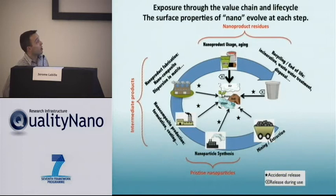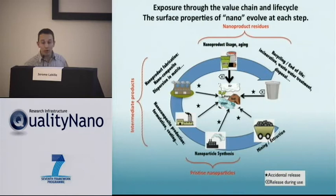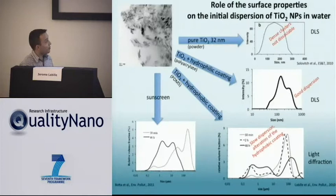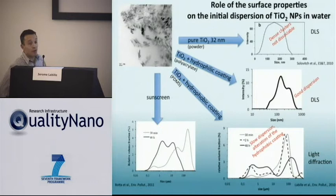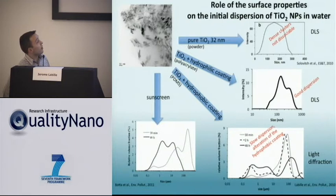Nanoparticles will be coated and embedded in a matrix, and finally it will be more some residues of alteration of nanoproducts that will be released. To illustrate this, I put the example of titanium dioxide nanoparticles used in sunscreens. There are four different formulations of titanium dioxide. The first example is pure TiO2 nanoparticles that disperse pretty well in water, despite the fact that the size measured by DLS is often larger than announced by the manufacturer, which is certainly due to the presence of dense non-dissociable clusters.